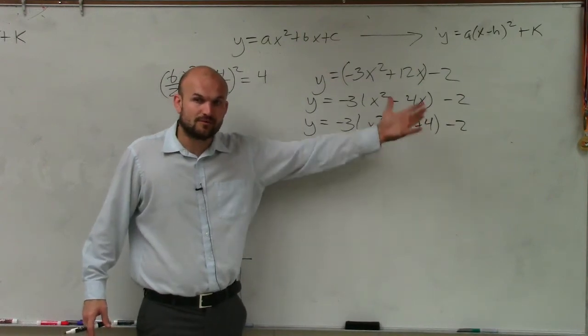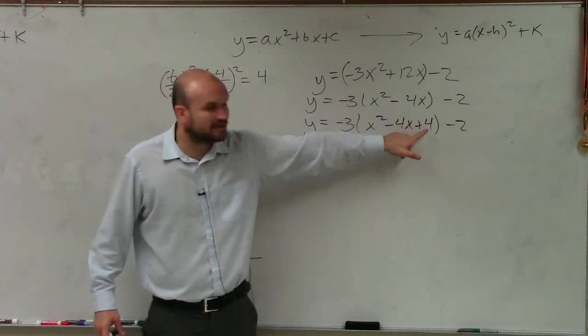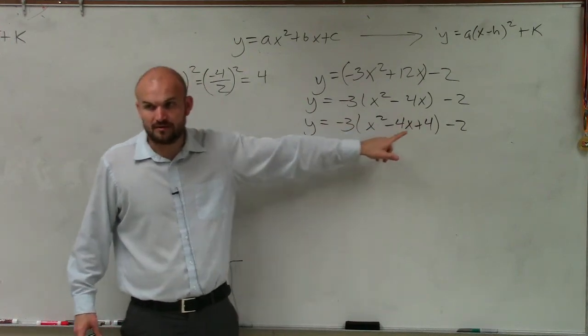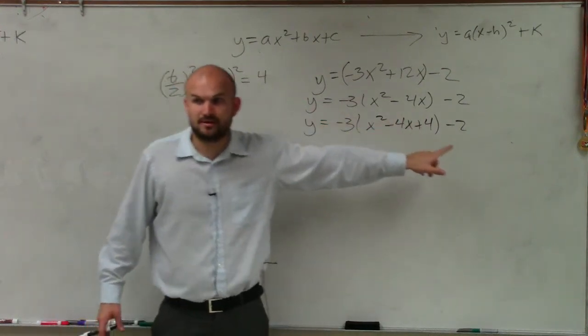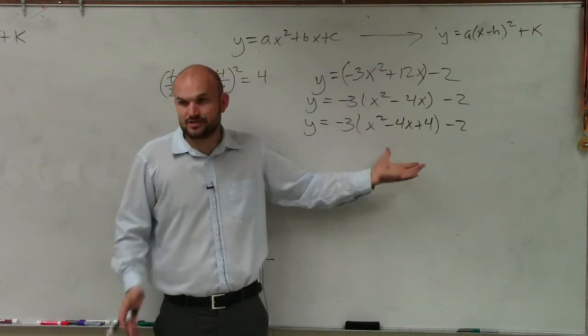But here, Ryan, where we came into the issue was this 4 is being multiplied by what, Ryan? What is that 4 being multiplied by? So really, if you were looking at what is the weight on the right side, it's actually negative 12, right?